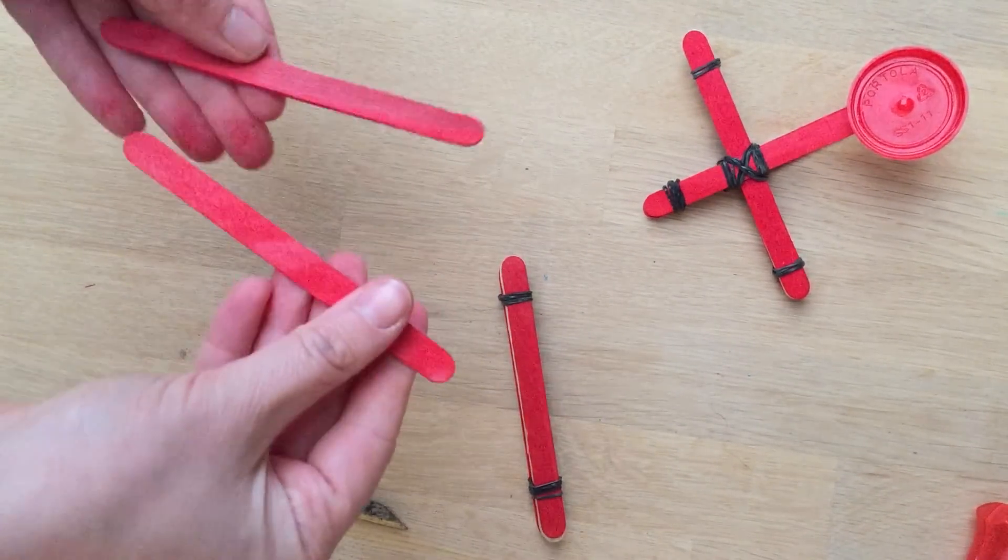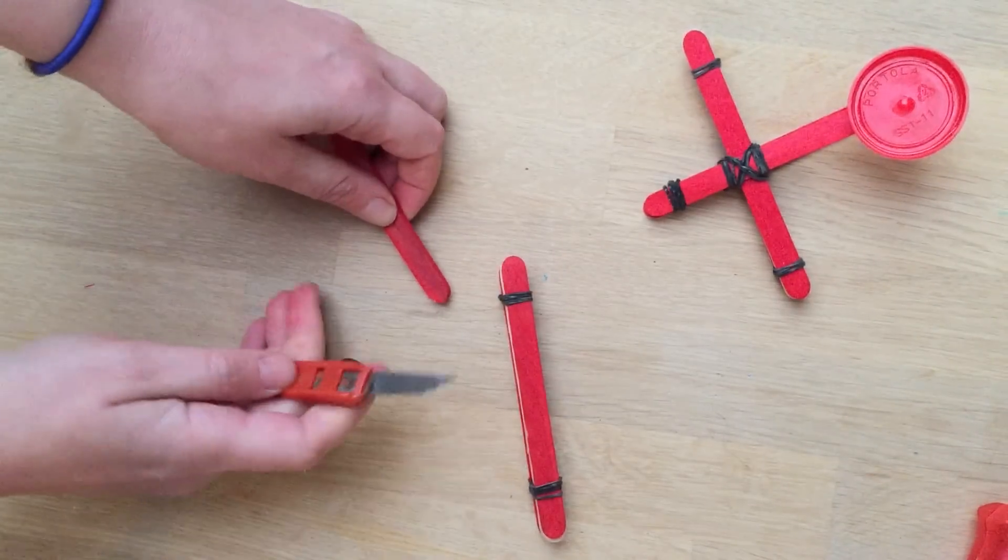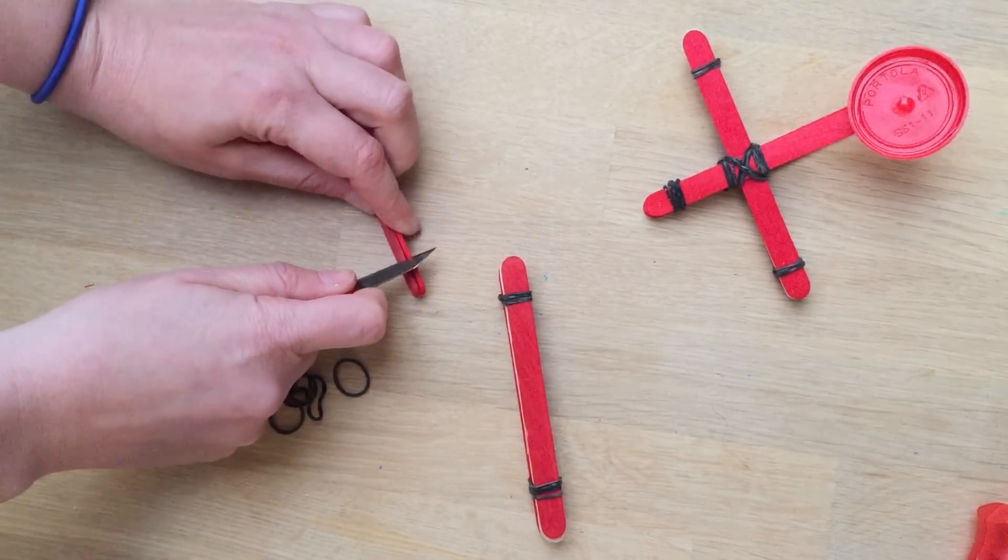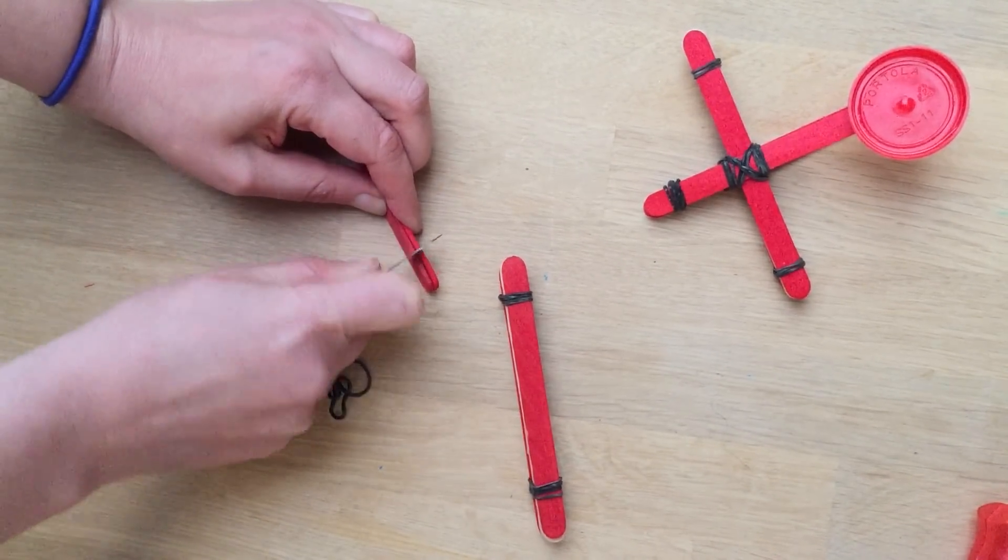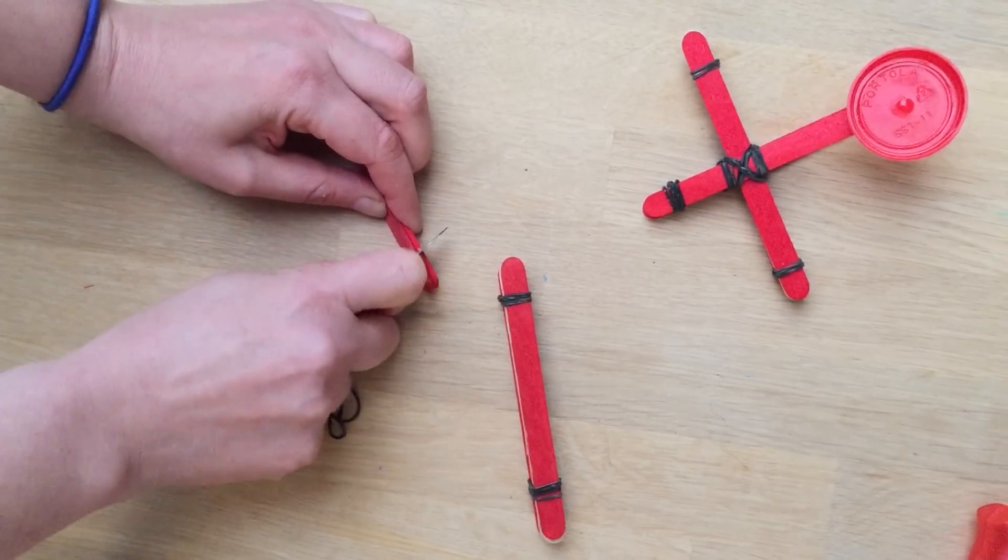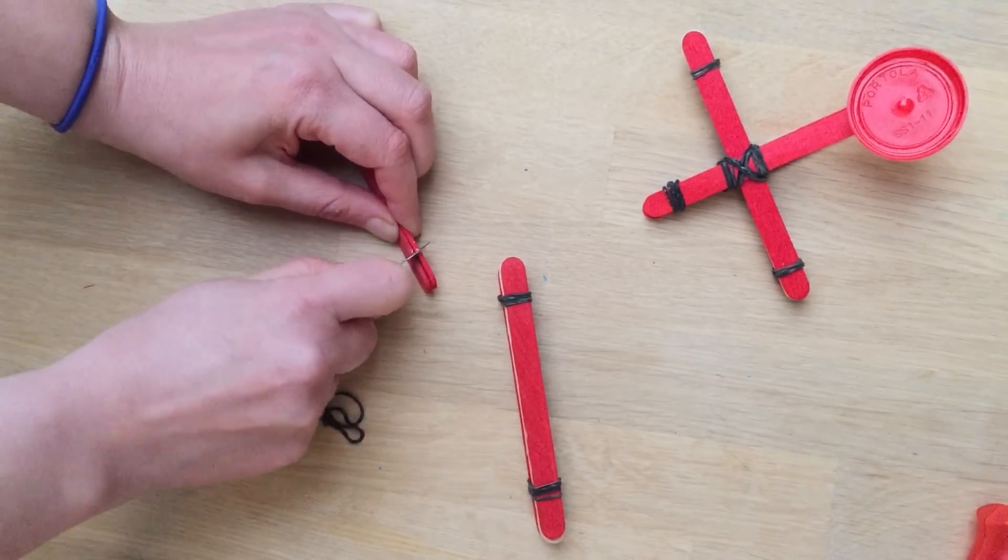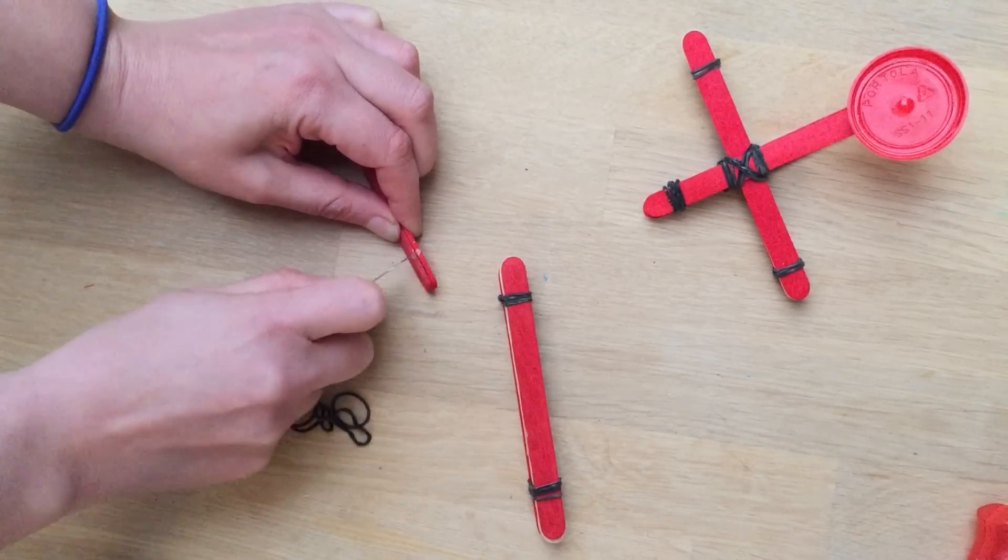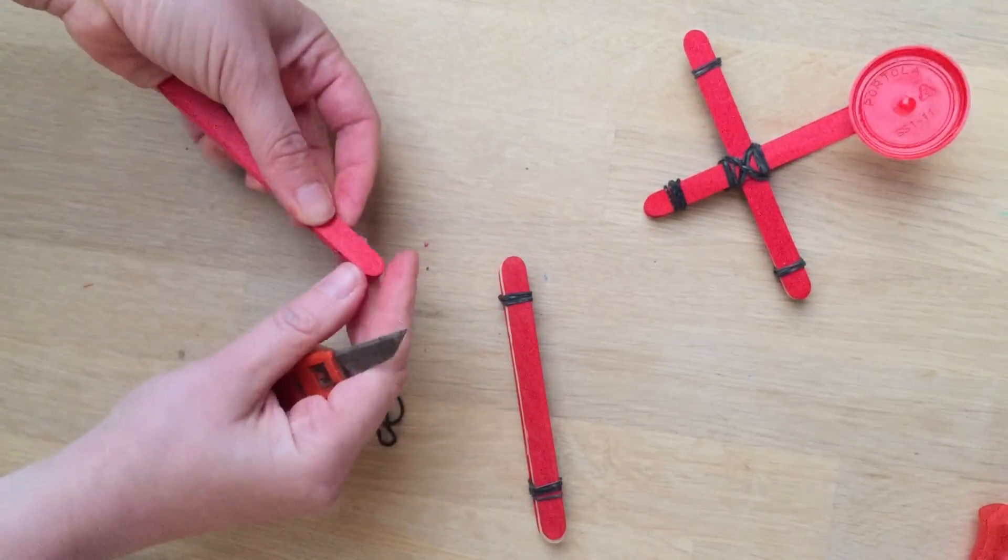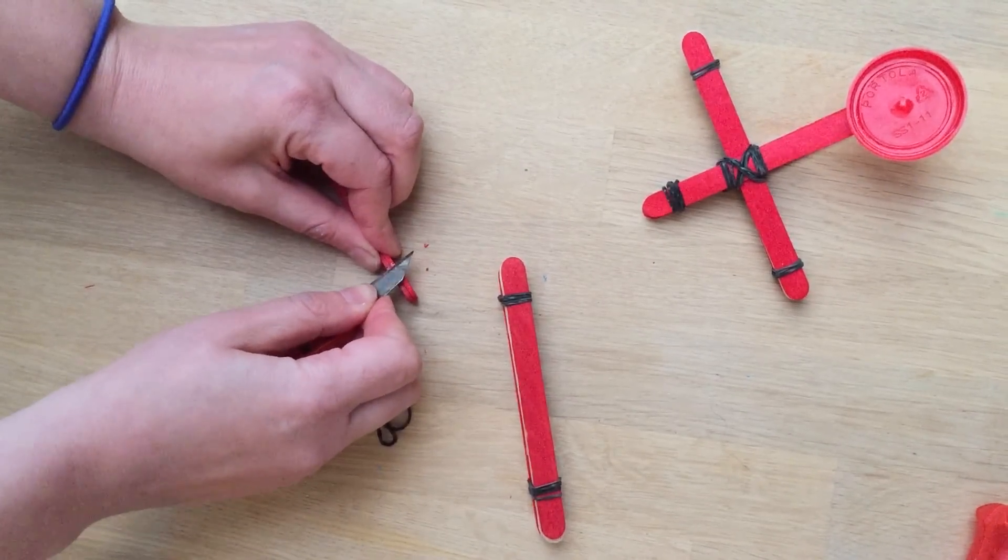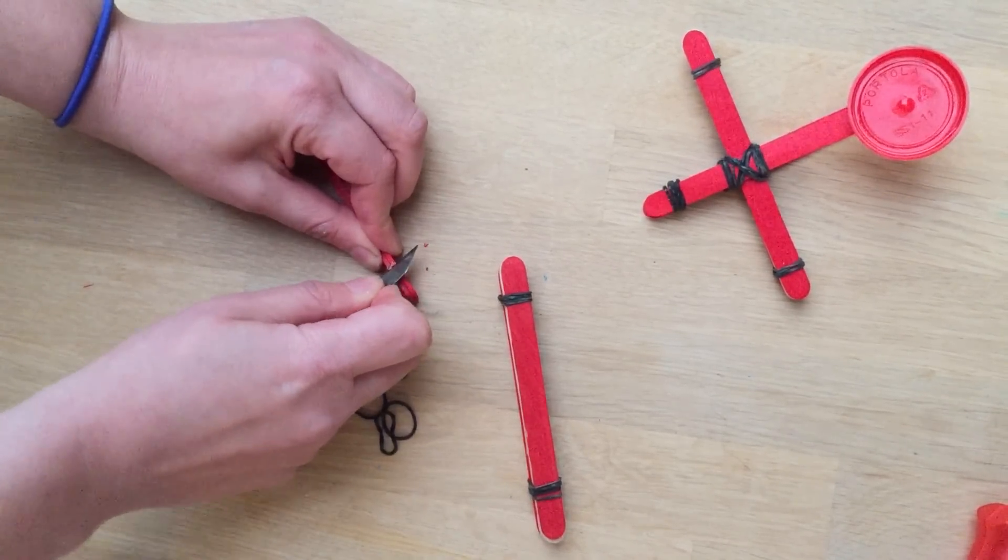Then you take two more pieces, and on these ones using a sharp knife—now you've got to be really careful and do this with an adult if need be—you just cut little grooves into it. The reason you do that is to help prevent the elastics from slipping. So just some little grooves.